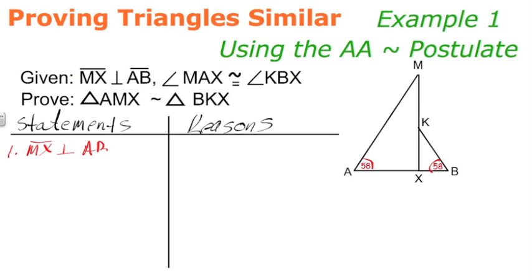Any good two-column proof has a given statement and MX or segment MX is perpendicular to AB, which we'll mark right now. And we'll write in these angles. We'll say that angle MAX is congruent to angle KBX. And that's our given.